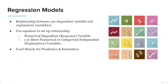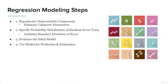Mainly, regression models are used for two things: prediction and estimation. The steps in regression modeling are: firstly, we're going to hypothesize the deterministic component in which we're going to estimate the unknown parameters. Secondly, we're going to specify the probability distribution of the random error term. Regression models are a type of probabilistic model, so they hypothesize both the deterministic component and the random error term. After hypothesizing the deterministic component, we will move on to specifying the probability distribution of the random error term, and we will need to estimate the standard deviation of error.